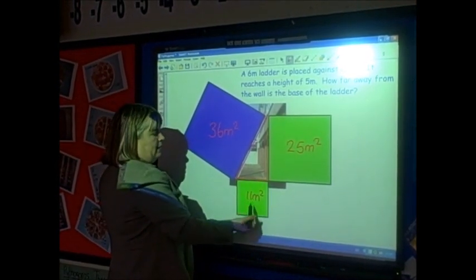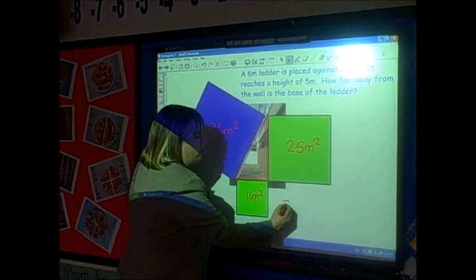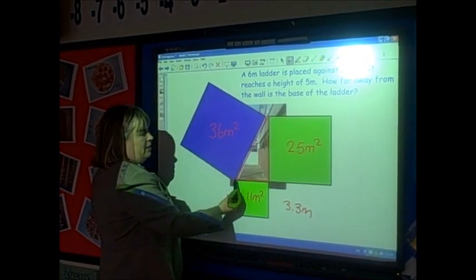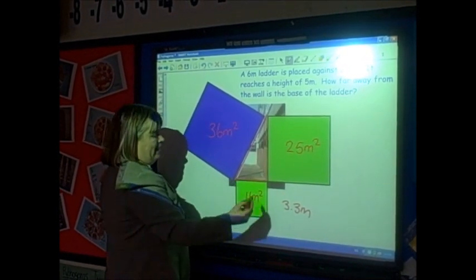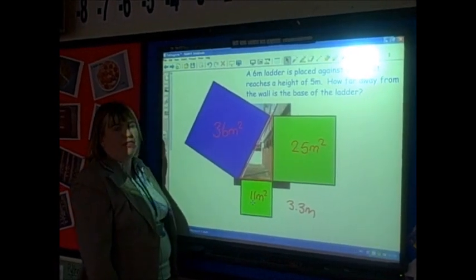To find this distance, I need to find the square root of 11, which is 3.3 metres, and that tells me the distance from the wall to the base of the ladder. That is Pythagoras' theorem. Thank you.